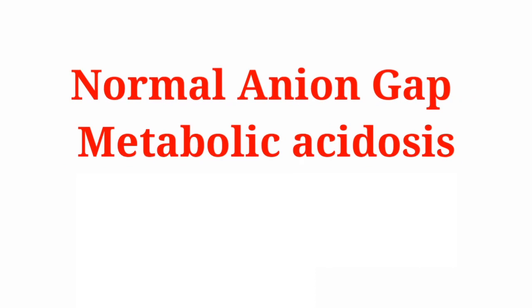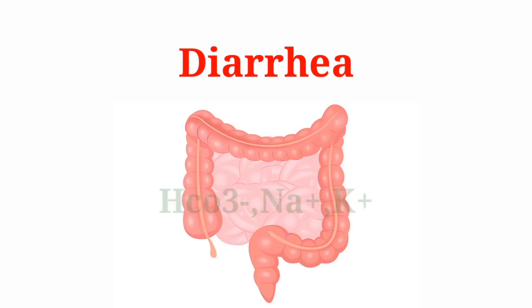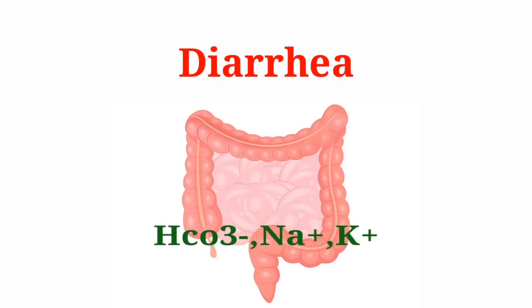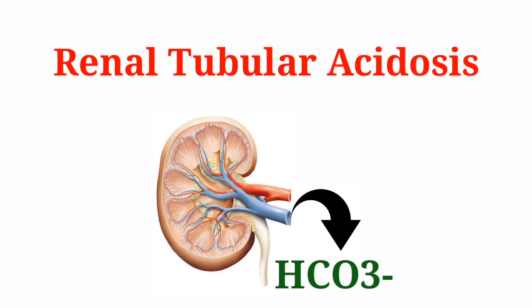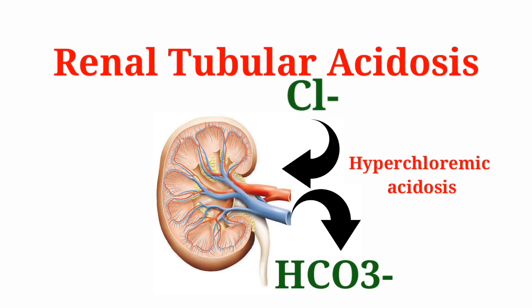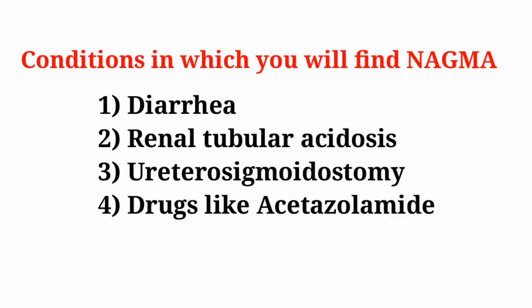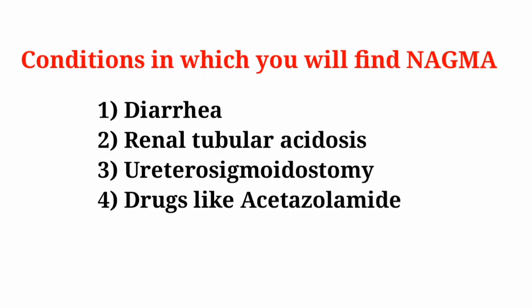Other causes of high anion gap metabolic acidosis include poisoning by methanol, ethylene glycol, and salicylates. For normal anion gap metabolic acidosis, the first condition is diarrhea, which causes loss of bicarbonate, sodium, and potassium. The second condition is renal tubular acidosis, which may be due to failure to excrete acid or reabsorb bicarbonate. To maintain electrical neutrality, there is reabsorption of chloride, so hyperchloremic acidosis may be seen.